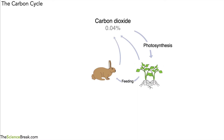Now, plants and rabbits both carry out a process that puts carbon dioxide back into the atmosphere, and that's called respiration. It's very important to remember that it's not just animals that do respiration, but plants as well — all living things carry out respiration. So photosynthesis takes carbon dioxide out of the air, while plants and animals put carbon dioxide back into the air through respiration.